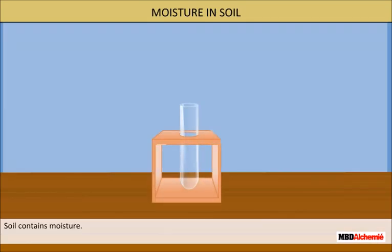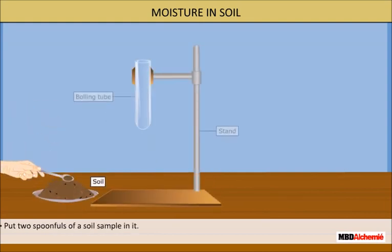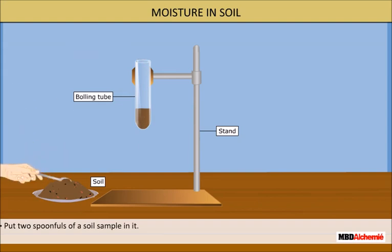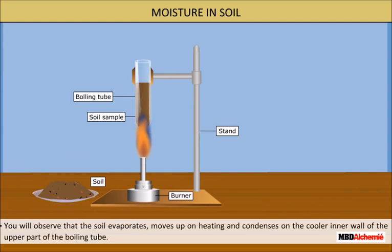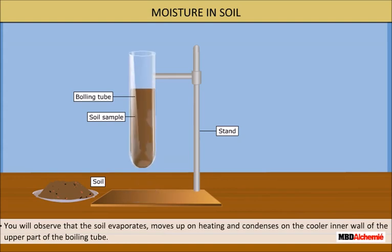Soil contains moisture. Let us do an activity to show this. Take a boiling tube. Put 2 spoonfuls of soil sample in it. Heat it and observe it. You will observe that the soil evaporates, moves up on heating and condenses on the cooler inner wall of the upper part of the boiling tube.